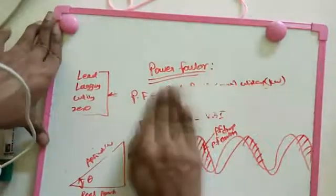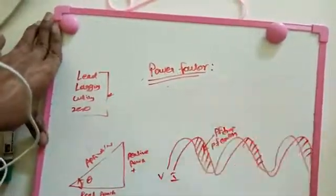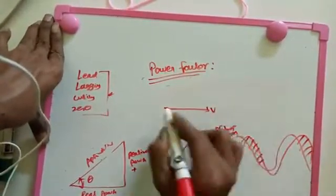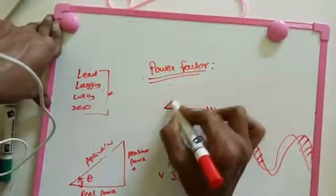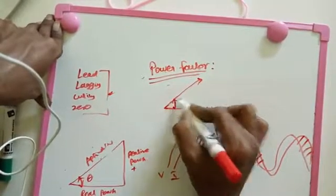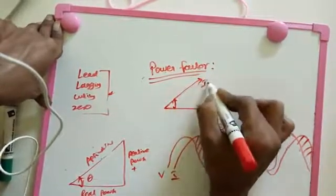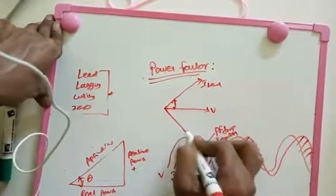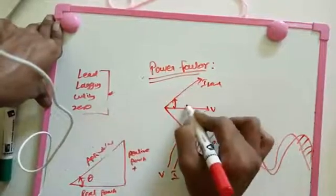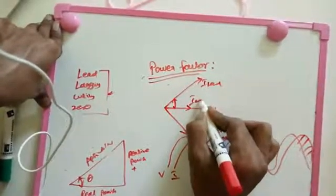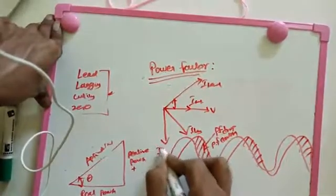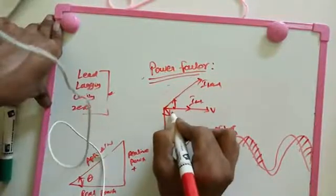We are going to see how leading and lagging power factor work. This is the voltage reference. If the power factor is leading, the current (I) goes high — ahead of voltage — that is leading. If lagging, the current lags behind — that is lagging (I lag). For unity, the current aligns with voltage. For zero power factor, I is at zero. These are the power factor angle conditions.